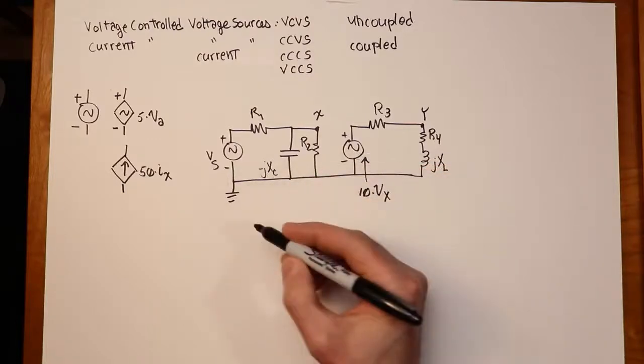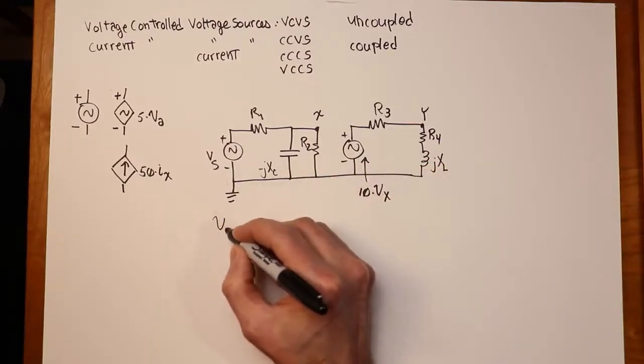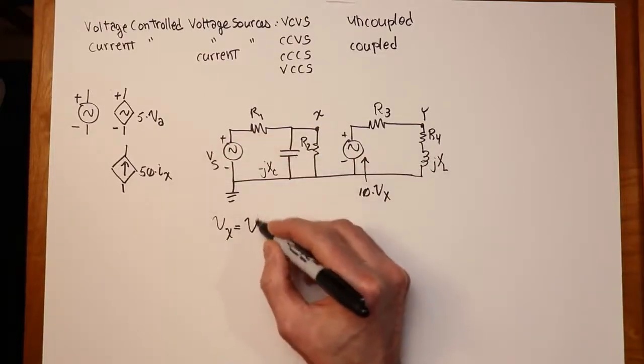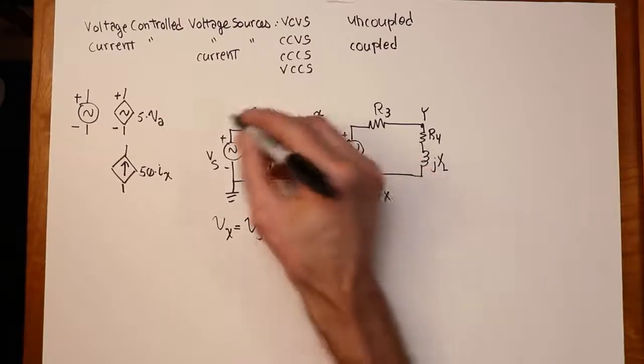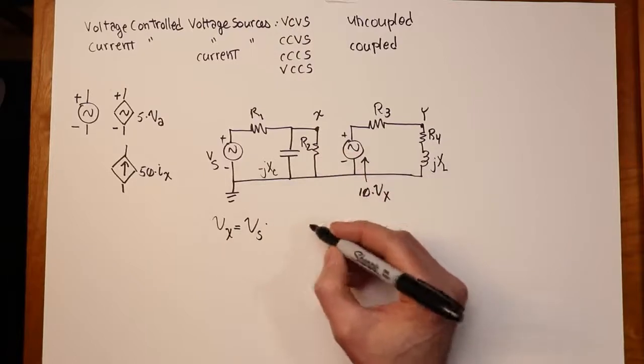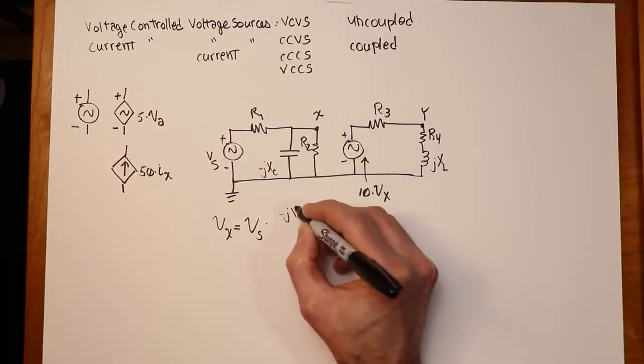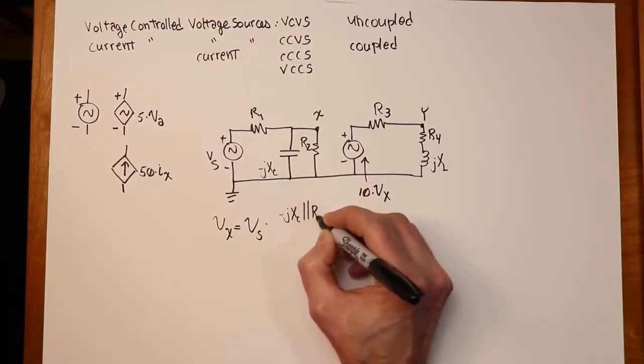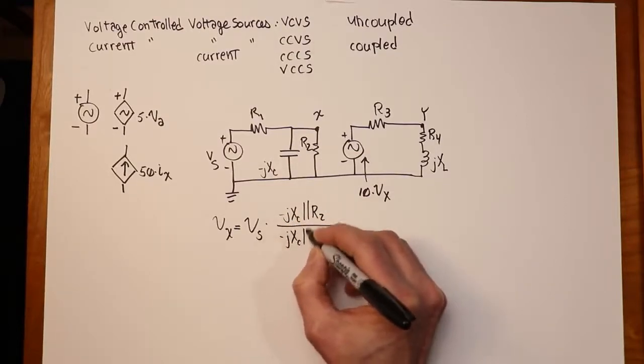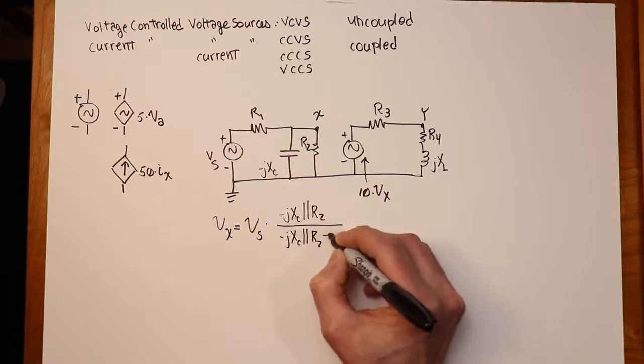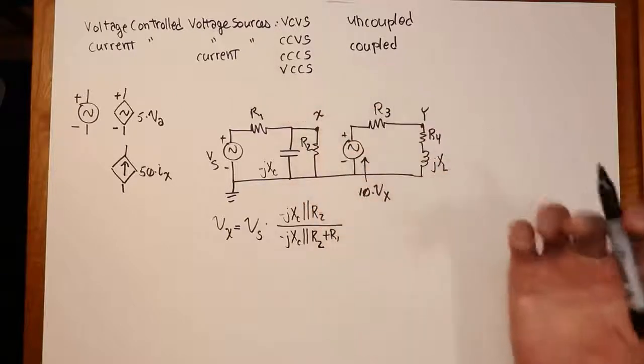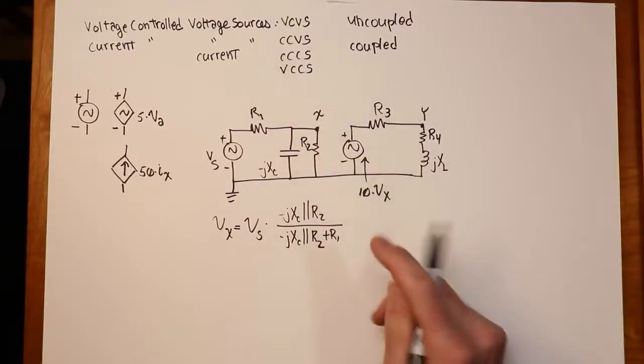So for example, we would say VX could be found with a little voltage divider rule. I'll take my source VS, multiply that by the impedance of the thing we're interested in, which would be R2 in parallel with minus JXC, divided by the total impedance, which would be that same thing plus R1. So that would give us this voltage right here, that's VX. Whatever that is, I multiply it by 10, that's this voltage.